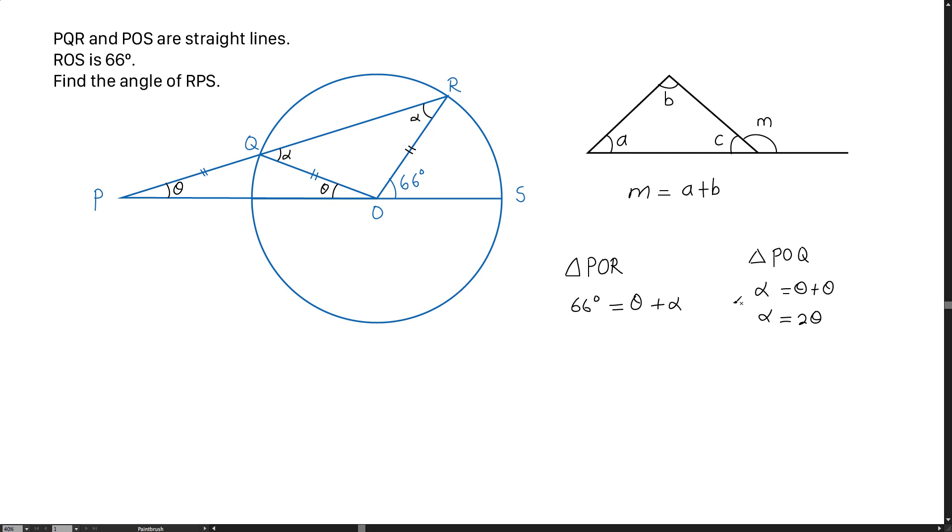Now, we're going to use alpha equal to 2 theta, this equation, to substitute into this equation. And the result we are going to get here is 66 degrees equals theta plus alpha, which is 2 theta. We substitute here. And we are getting theta plus 2 theta is 3 theta equal to 66 degrees.